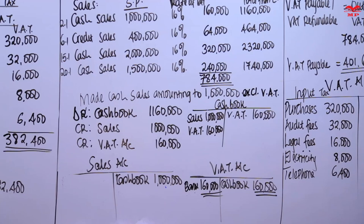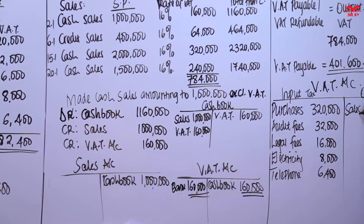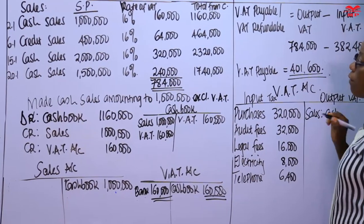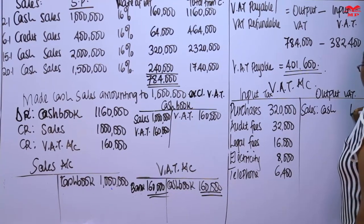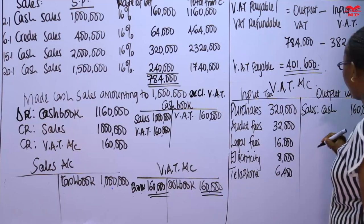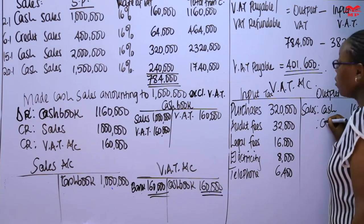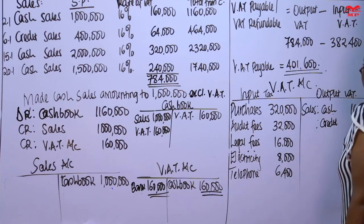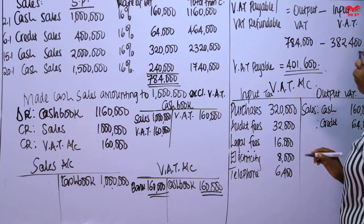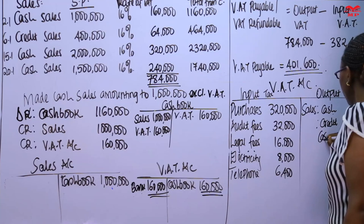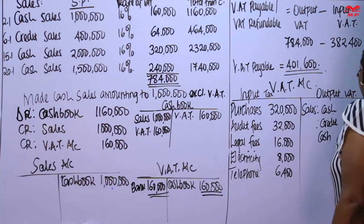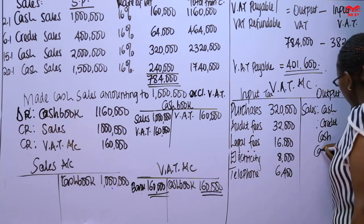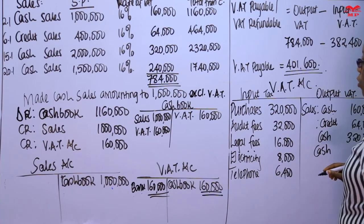For sales, we have cash sales. The first cash sales VAT is $160,000. The second sales are $64,000 on credit. The third cash sale collected $320,000. The fourth cash sale collected $240,000.